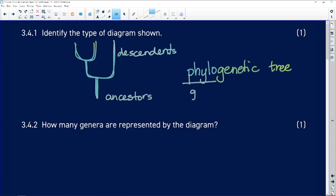Phylogenetic tree, we're referring to different groups of organisms. Genetic, we're referring to how they are genetically related to each other. So this type of diagram is a phylogenetic tree.